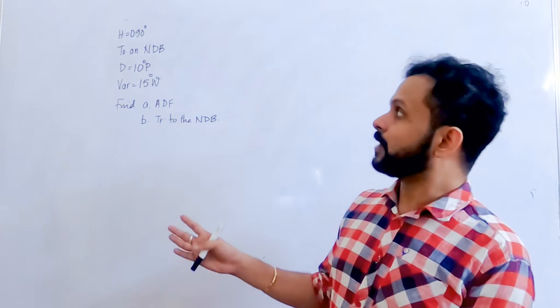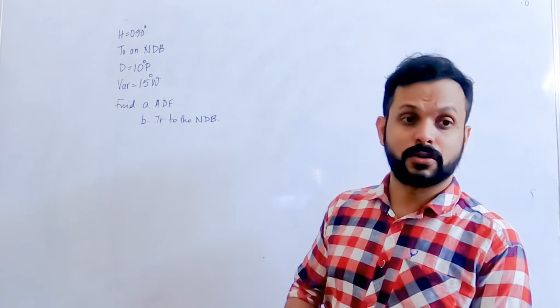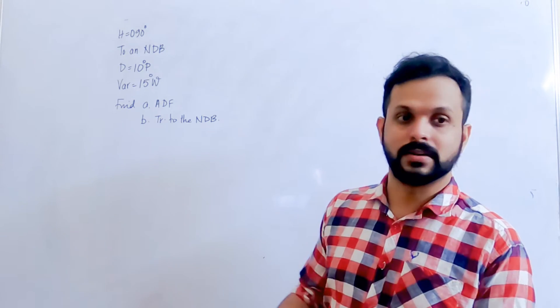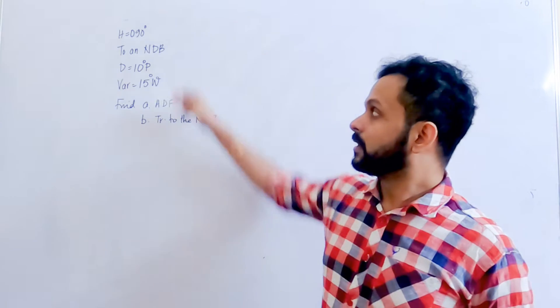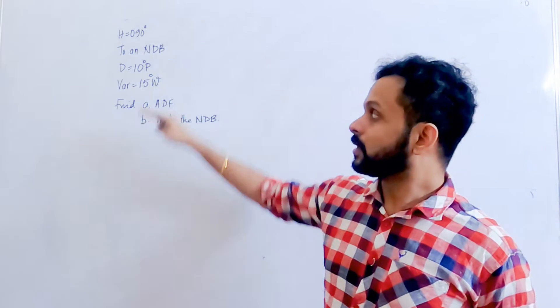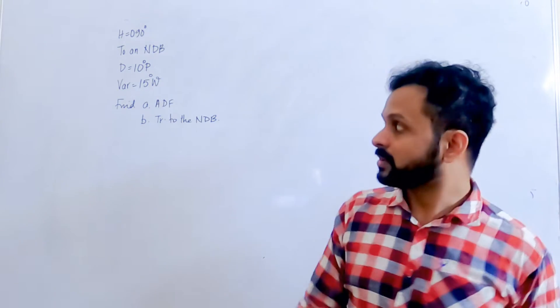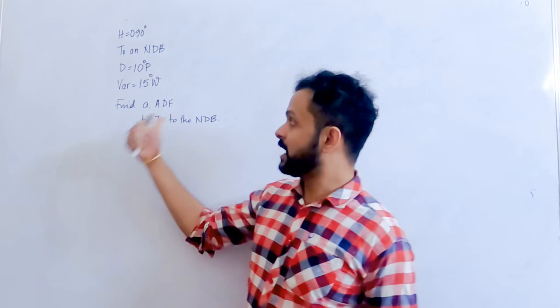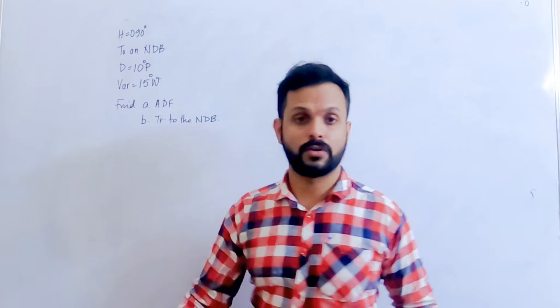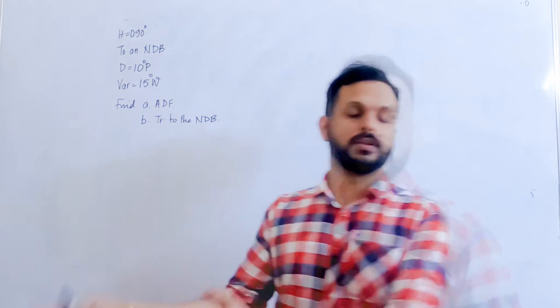An aircraft is heading 090 degrees, tracking to an NDB. Given drift is 10 degrees port, variation is 15 degrees west. We have to find out the ADF indication and track to the NDB.